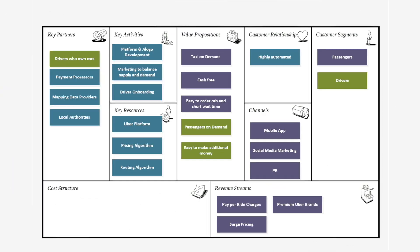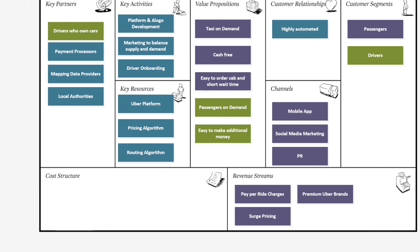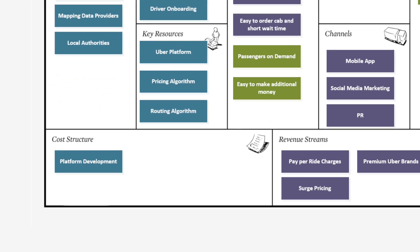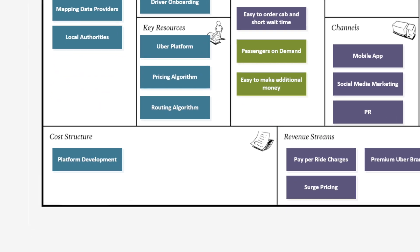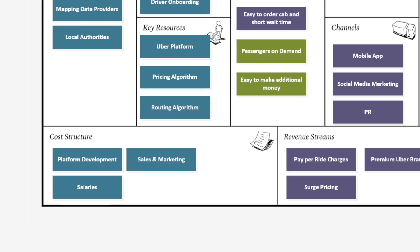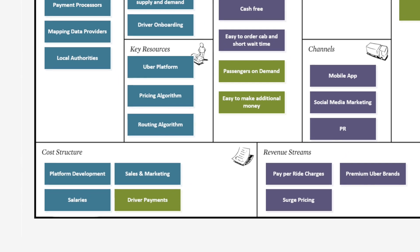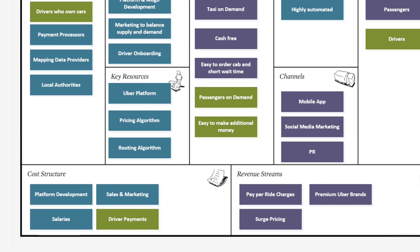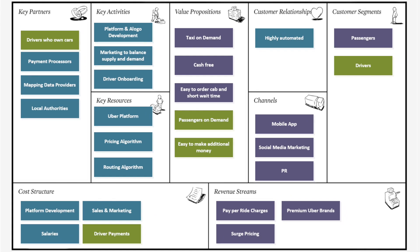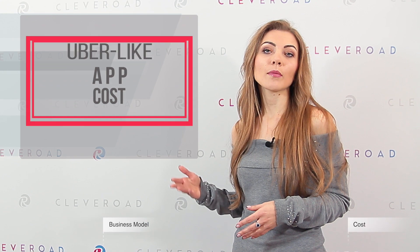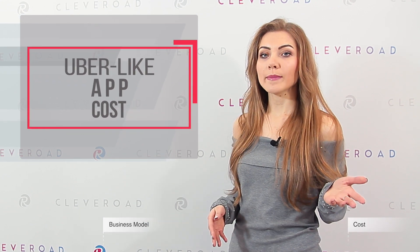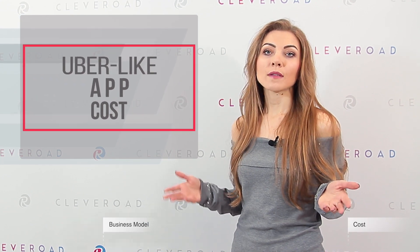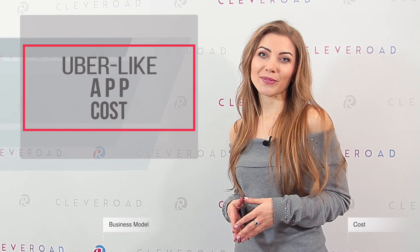The last, but not the least, thing in the Uber-like business model is what it will cost you. Here is a list of expenses you should be prepared for: tech infrastructure, app creation and maintenance, salary for permanent employees, and marketing expenses. The price of creating Uber-like apps depends on a number of factors: platforms, features and functionality, and your budget.